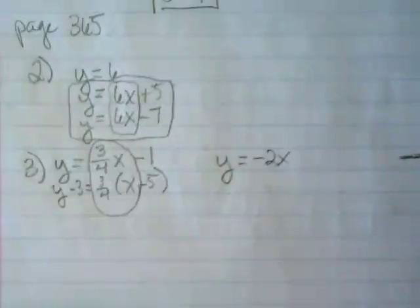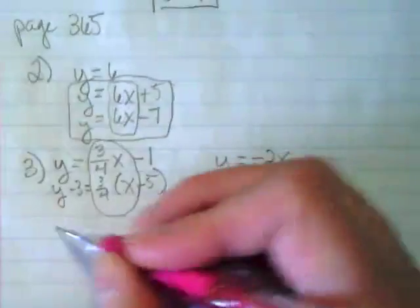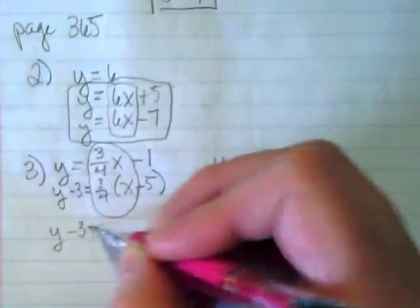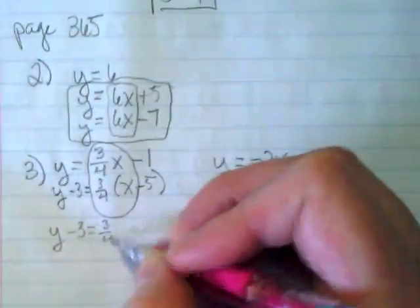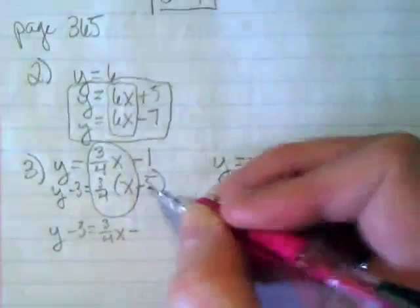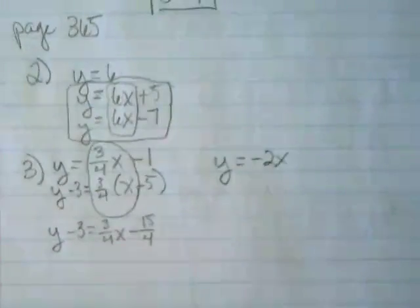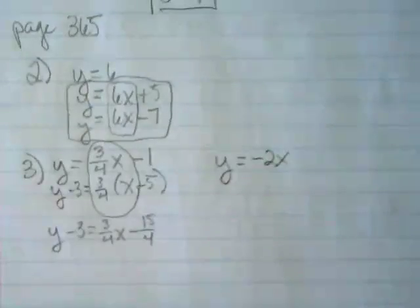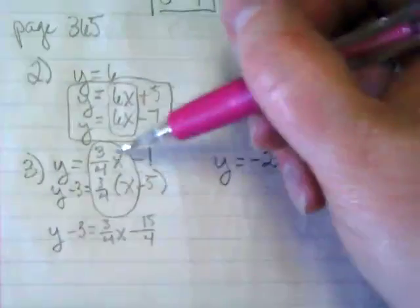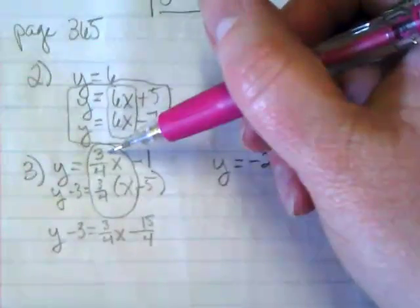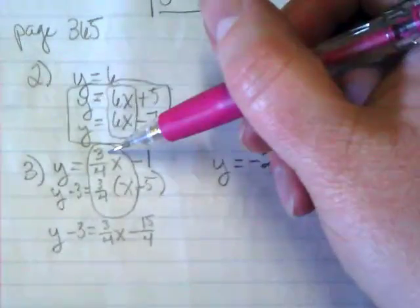I don't get it. Me neither. Well then, let me continue it. Y minus 3 equals 3/4X minus 15/4. What's the slope in that equation right now? What was the slope in the first equation? That's why they're parallel. Do you see it now?